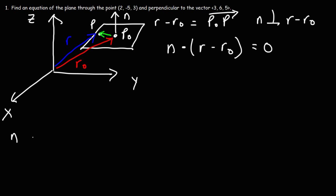Now the vector N, the normal vector, will be represented by these values, A comma B comma C. R is going to equal XYZ, which is based on point P, and R0 is based on P0, which will have the values X0, Y0, Z0.